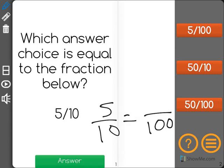I can see looking at it, it won't be 50 over 10, because 5 out of 10 can't be equal to 50 out of 10, that's much bigger than it.